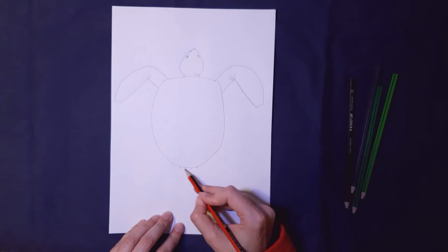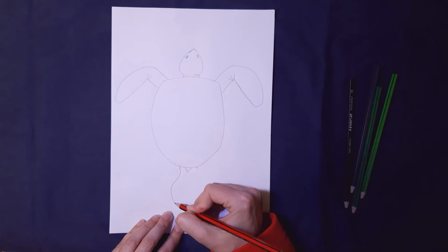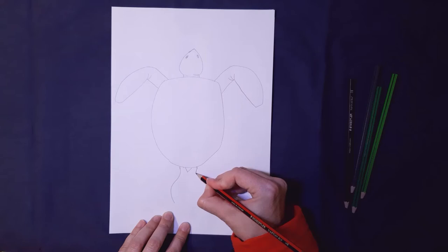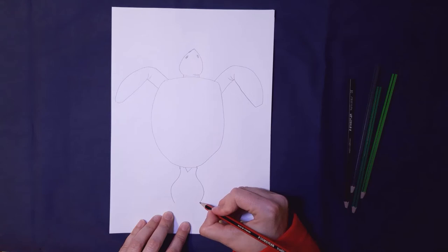We're going to do a curved line that goes out and back in, and do the same on the side. And then we're going to do the outside of the flipper.